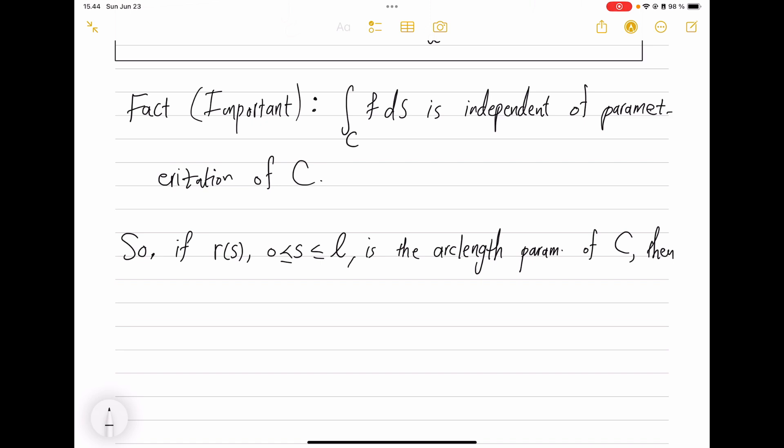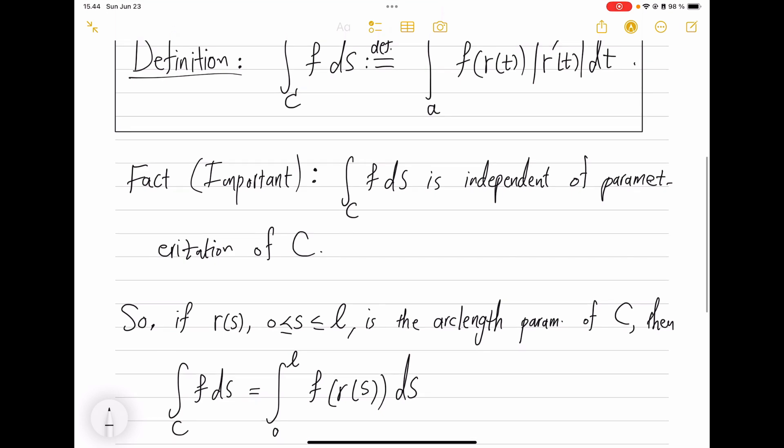It's difficult to find in practice, but in theory it makes life so much easier. If r(s), s always from zero to the length of the curve—say length L is the arc length—it's one and unique. It's the arc length parameterization of C.